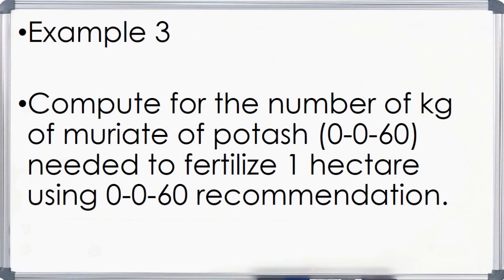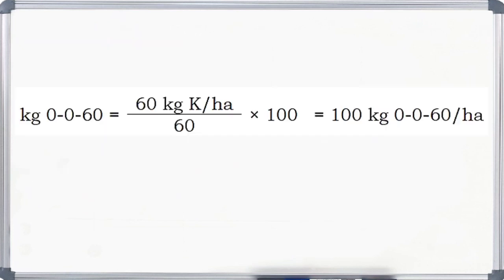Example number 3: Let us compute for the number of kg of muriate of potash (0-0-60) needed to fertilize 1 hectare. Substituting the formula, fertilizer needed for muriate of potash equals 60 kg of potassium per hectare divided by 60, multiplied by 100. The result is 100 kg of muriate of potash per hectare.